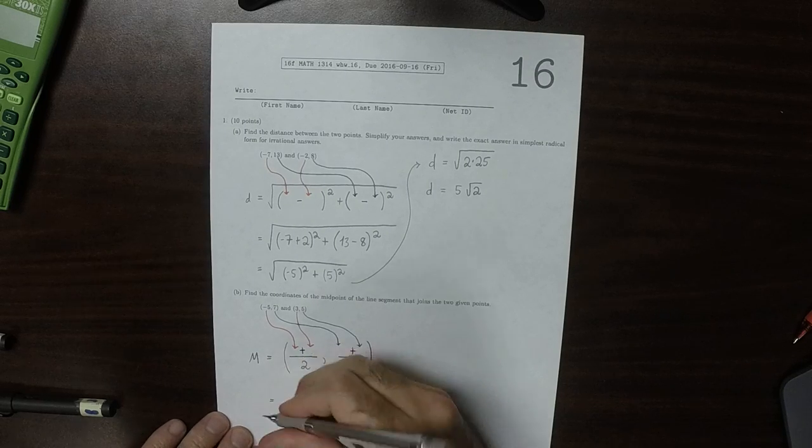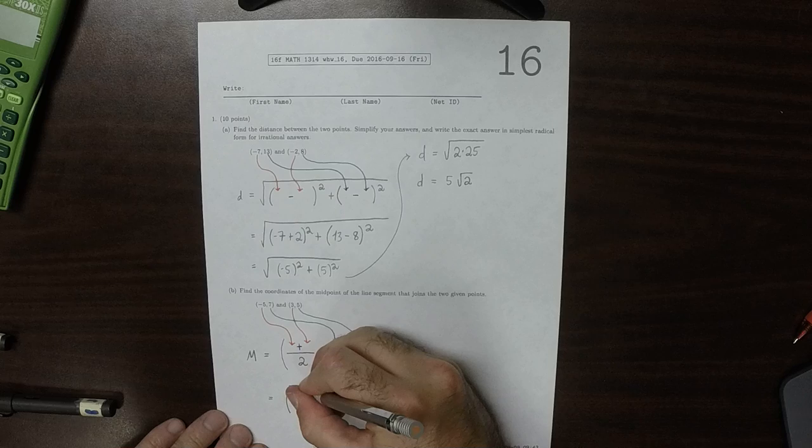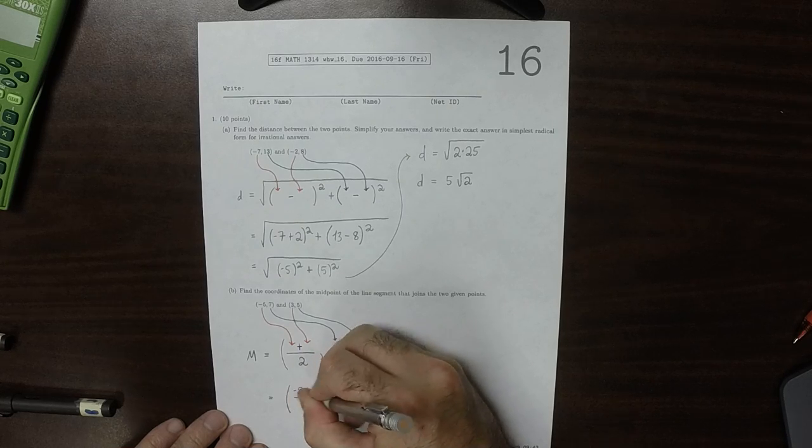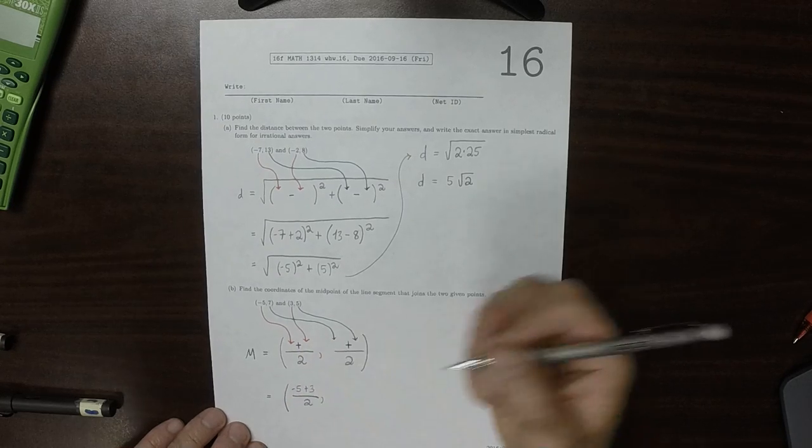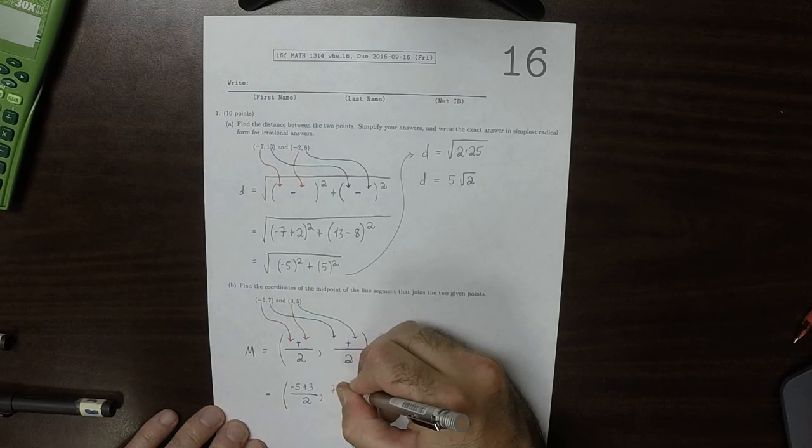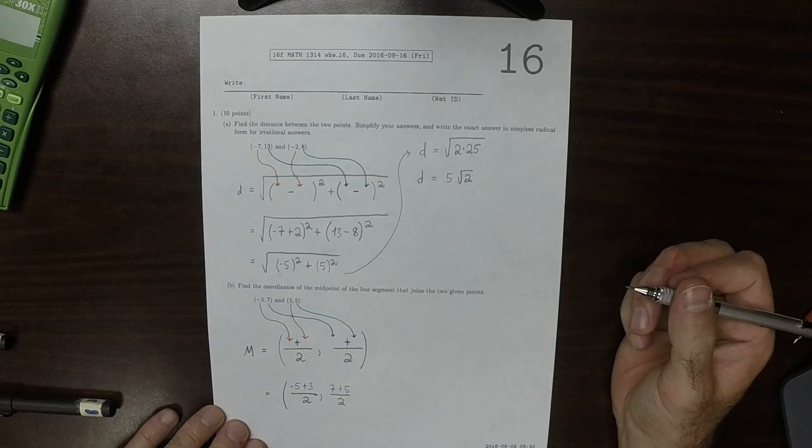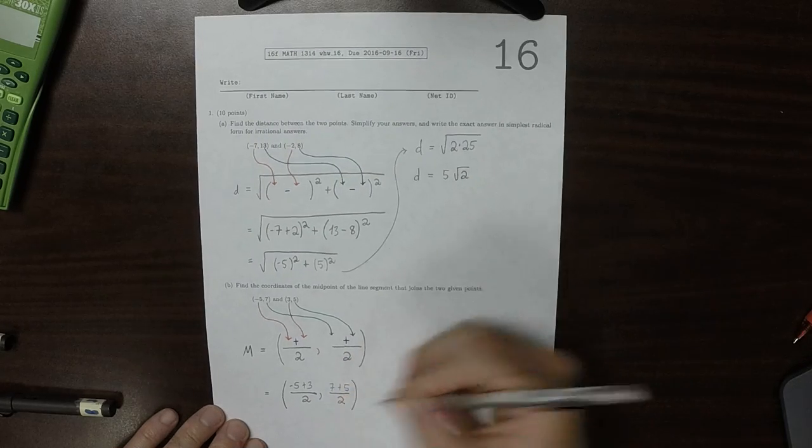So the midpoint will be negative 5 plus 3 over 2 in the first coordinate, and 7 plus 5, divide by 2.